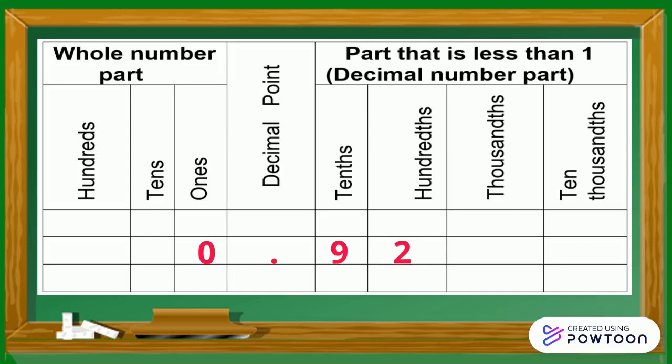The second digit to the right after the decimal point has the place value of hundredths. It is read as 92 hundredths.